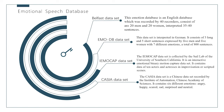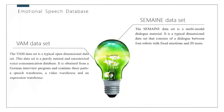The VAM dataset is a typical open dimensional dataset. A total of 1,018 sentences express emotions across three dimensions: valence, activation, and dominance, with label values between -1 and 1. This dataset represents more negative emotions.